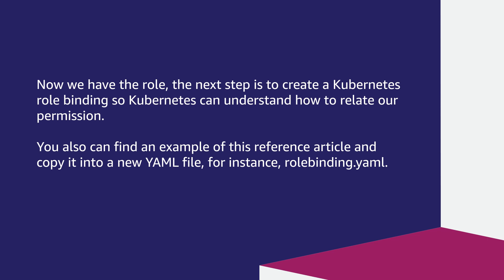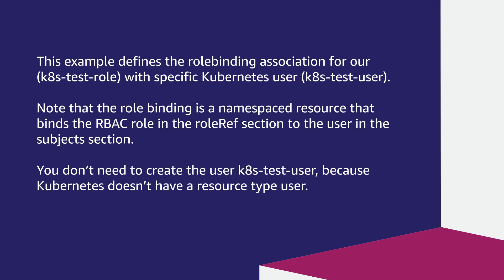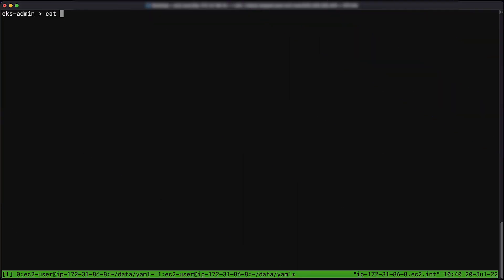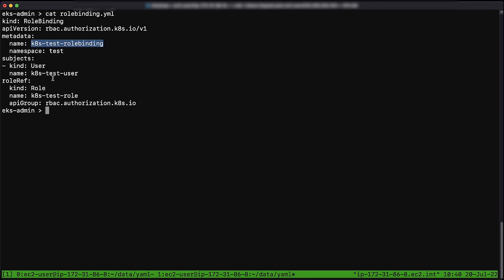Now we have the role. The next step is to create a Kubernetes role binding so Kubernetes can understand how to relate our permissions. You can also find an example in the reference article and copy it into a new YAML file — for instance, rolebinding.yaml. This example defines the role binding association for k8s-test-role with the specific Kubernetes user k8s-test-user. Note that the role binding is a namespace-based resource that binds the RBAC role in the roleRef section to the user in the subjects section. You don't need to create the user k8s-test-user, because Kubernetes doesn't have a resource type called user. Then create the RBAC role binding by using the kubectl command to apply this change.